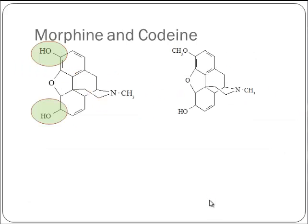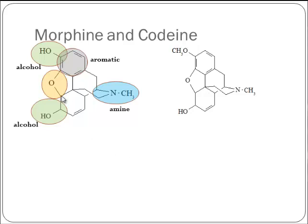How about morphine and codeine? We have a similar kind of thing, except that nature did this. Morphine has two alcohol groups, an aromatic, and a nitrogen with three single bonds to carbons — that's an amine, specifically a tertiary amine. There's also C single bond O single bond C closing a ring — that's an ether. And there's one more: a carbon-to-carbon double bond — that makes an alkene. So morphine has two alcohols, one on an aromatic ring, an ether in a cyclic system, a tertiary amine, and an alkene.